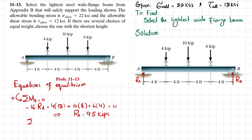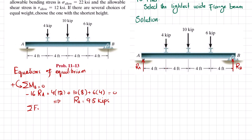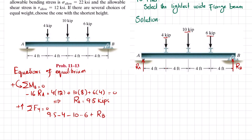Now we find R_B using the equilibrium condition that the sum of all forces along the y-direction equals zero, taking upward forces as positive. So: R_A − 4 − 10 − 6 + R_B = 0. With R_A = 9.5 kips: 9.5 − 4 − 10 − 6 + R_B = 0, giving R_B = 10.5 kips. Now we have both reaction forces: 9.5 kips at A and 10.5 kips at B.